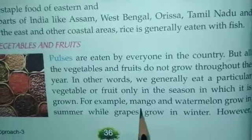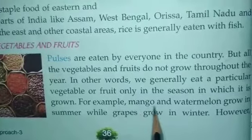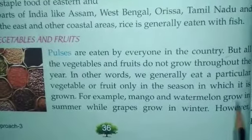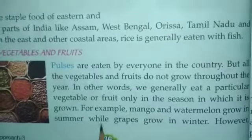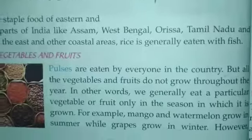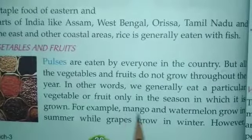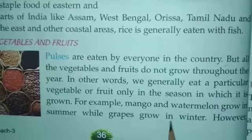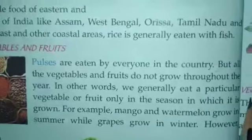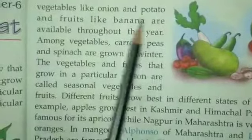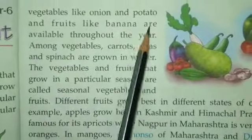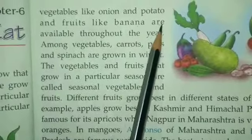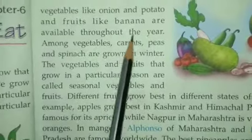For example, mango and watermelon — you know mango is grown in summer and we get it in summer only. While grapes are grown in winter. However, vegetables like onion and potato, and fruits like banana, are available throughout the year.